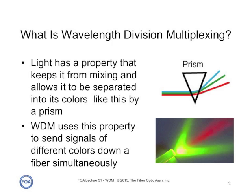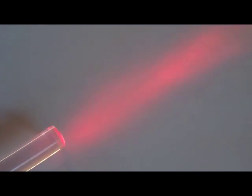So let's use a large core plastic fiber and some laser pointers to see exactly what's happening when wavelength division multiplexing is used. This is a large core plastic fiber and we'll use a red laser pointer, and we'll modulate it to show how signals are typically modulated in the optical fiber.